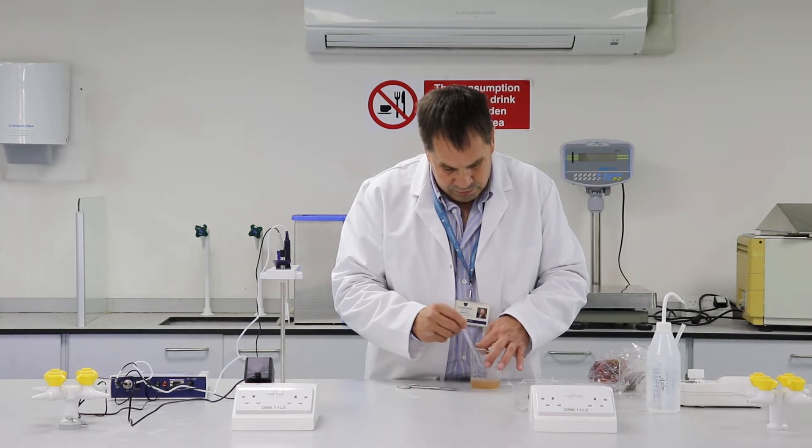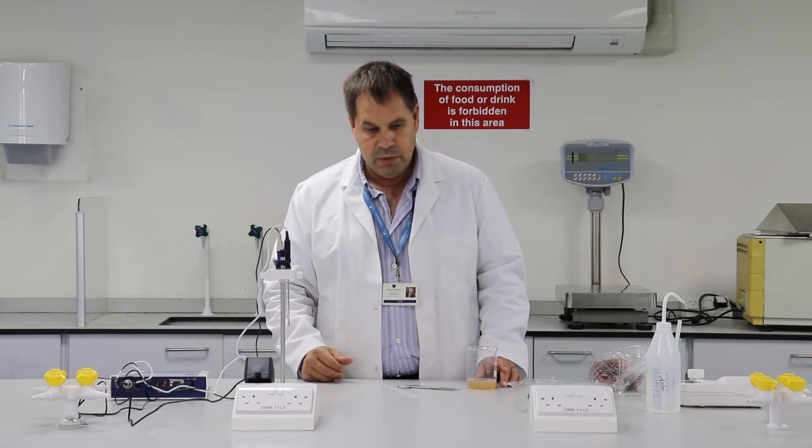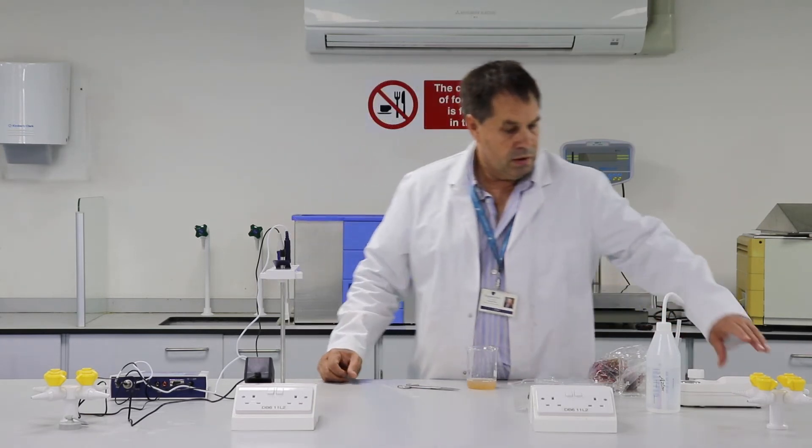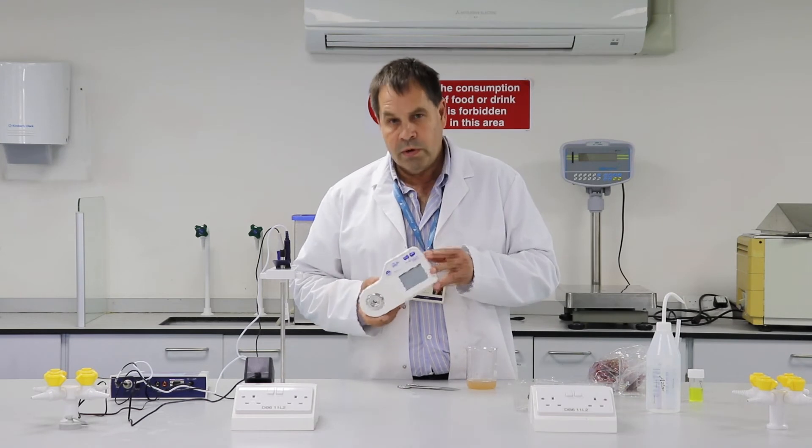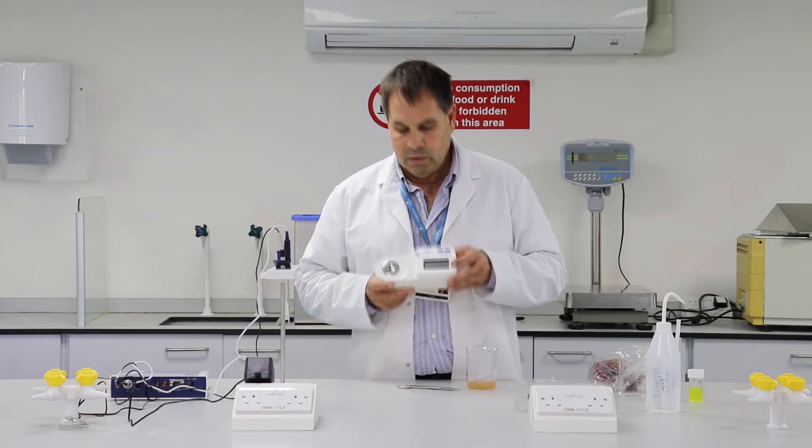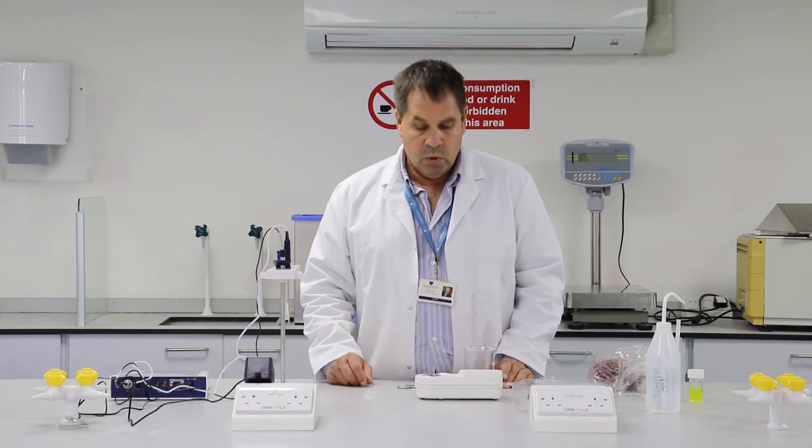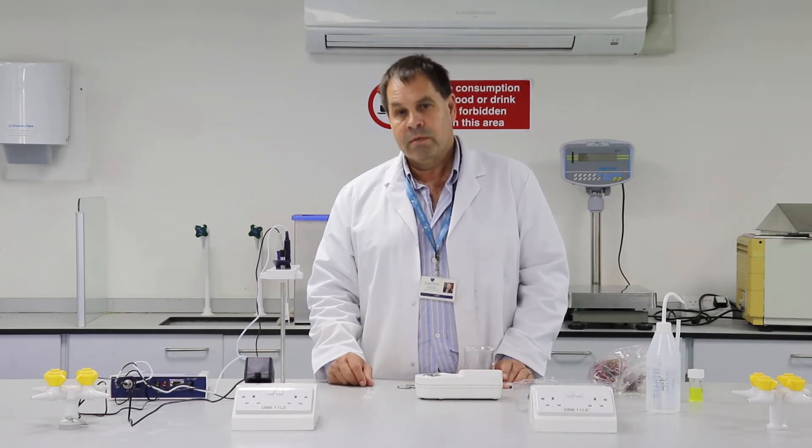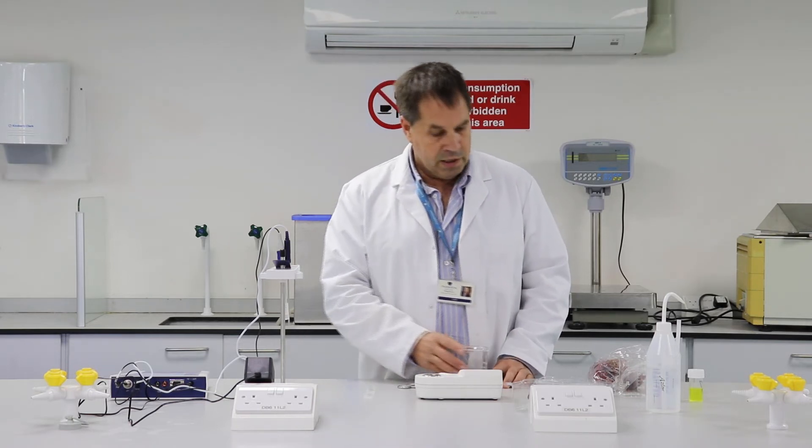Normally I would filter this through muslin, but for the purposes of today's demonstration we'll just measure it unfiltered. What I have here is a digital refractometer and this is what we use to measure sugar. The way it works is that the more sugar in the solution, the more it will bend a beam of light. So the higher the level of sugar in the solution, the more the light actually bends.